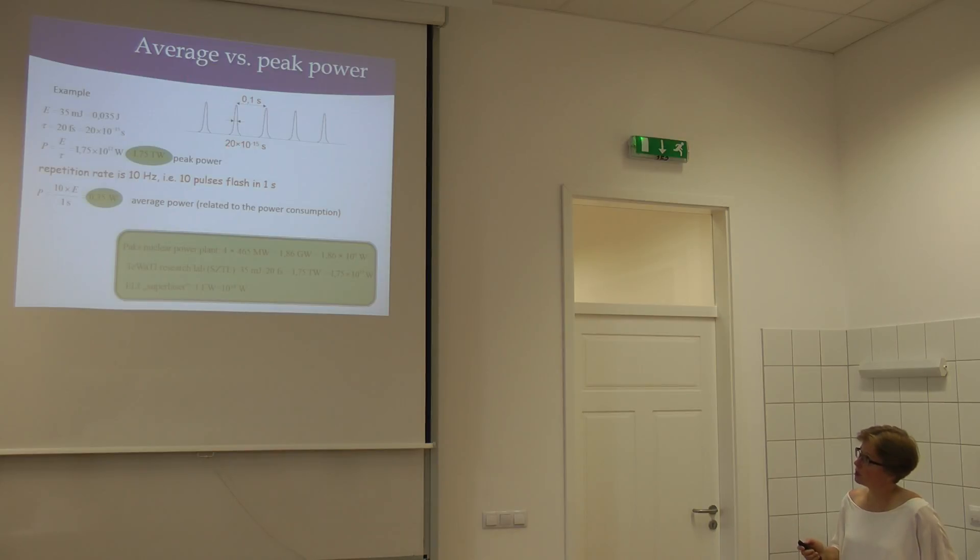So this is a pulsed laser I'm talking about. I got the numbers from a laboratory that uses this type of laser. So in each pulse they have 35 millijoules of energy, the pulse duration is 20 femtoseconds, and then we can calculate what's the peak power. So we just take the energy of one pulse and divide by the length of the pulse and it gives you 10 to the 12 watts, which is a huge number.